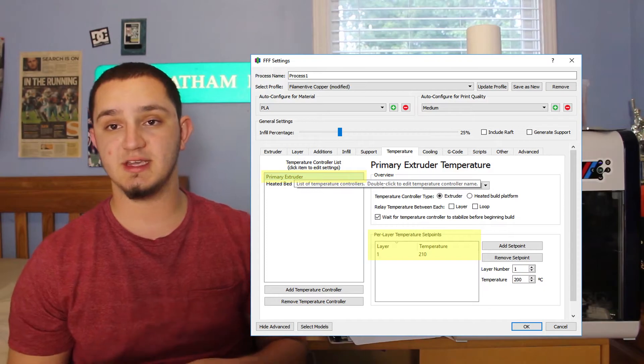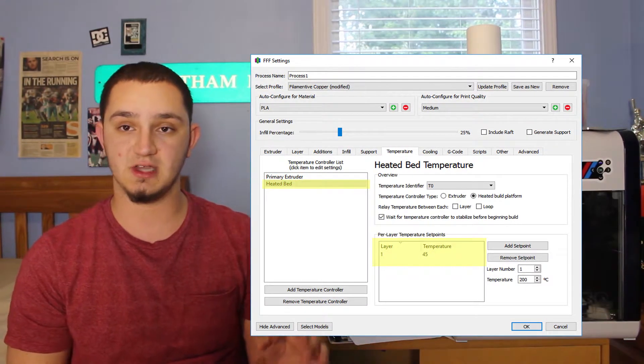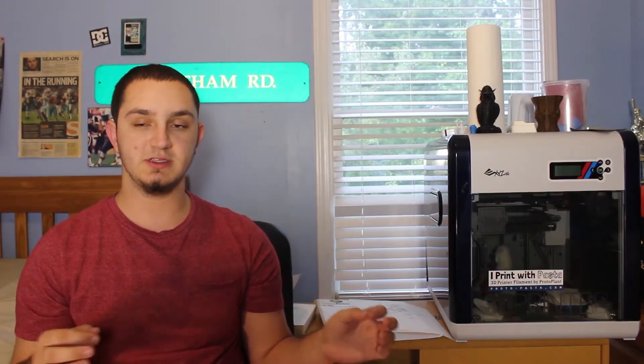Temperature wise, I use 210 degrees Celsius on the hot end and 45 degrees Celsius on the hot bed. This is a base PLA, so you can slightly tweak your hot bed temperatures. On my Robo 3D, it's a glass bed, so I use a glue stick—just a standard Elmer's glue stick—to help adhere to the bed, and I never had a problem with adhesion.